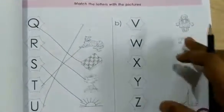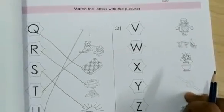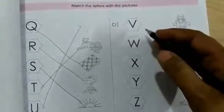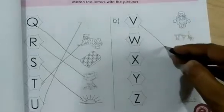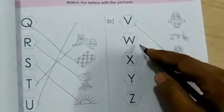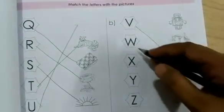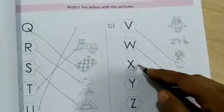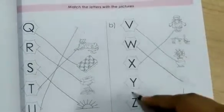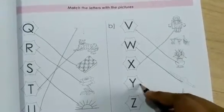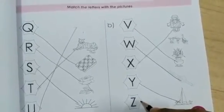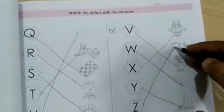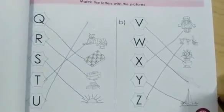Here is our another match the letters with pictures. Then V. V for vase. W for watch. X for x-ray. Y for yacht. Z for zoo. Okay? Our second topic is done.